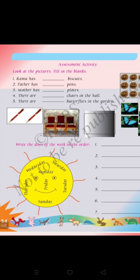Write the days of the week in order. They are giving a picture of a sun and you have to complete the days. I already completed — you have to do the same: first day Sunday, second day Monday, third day Tuesday, fourth day Wednesday, fifth day Thursday, sixth day Friday, seventh day Saturday.